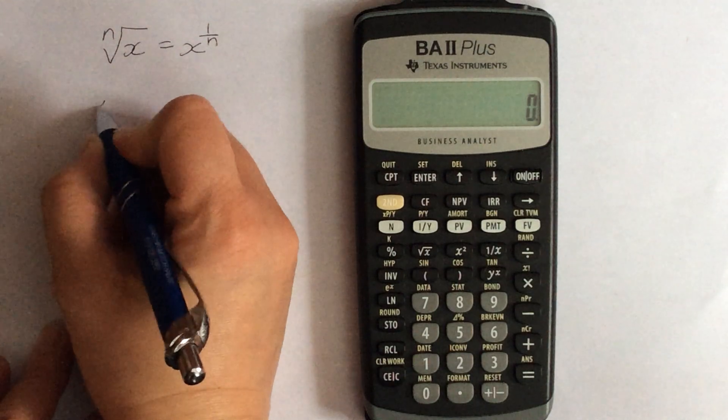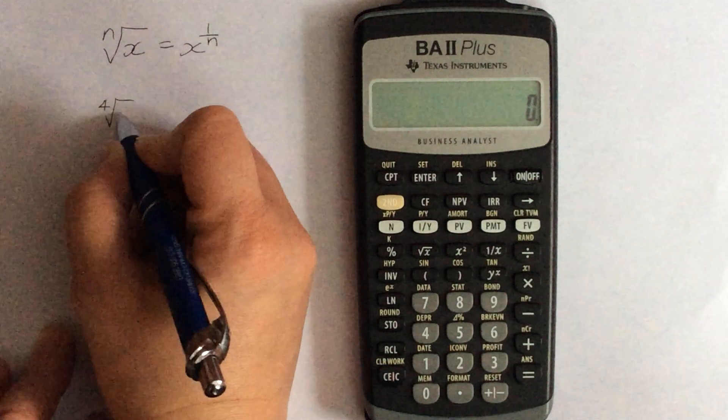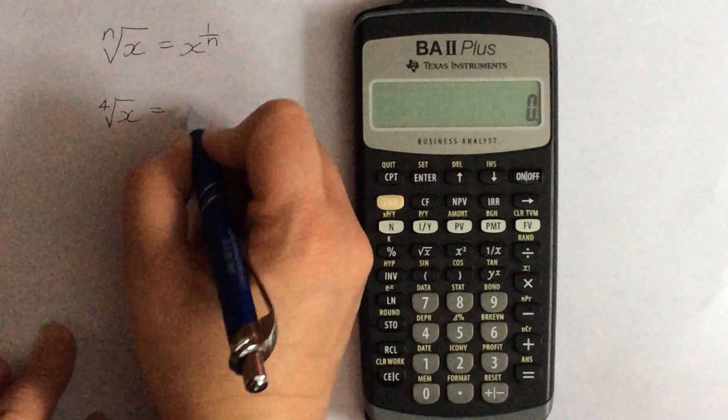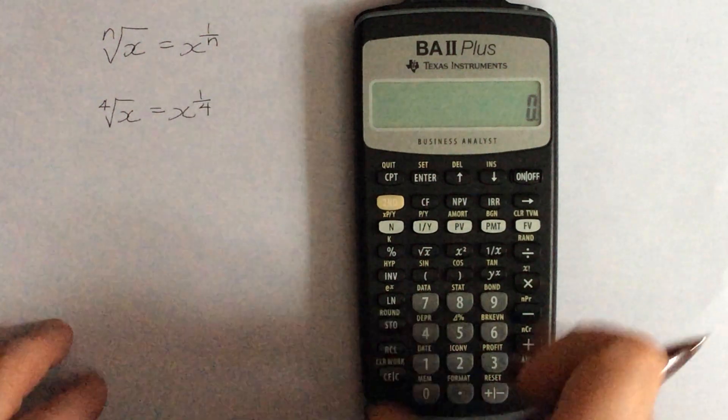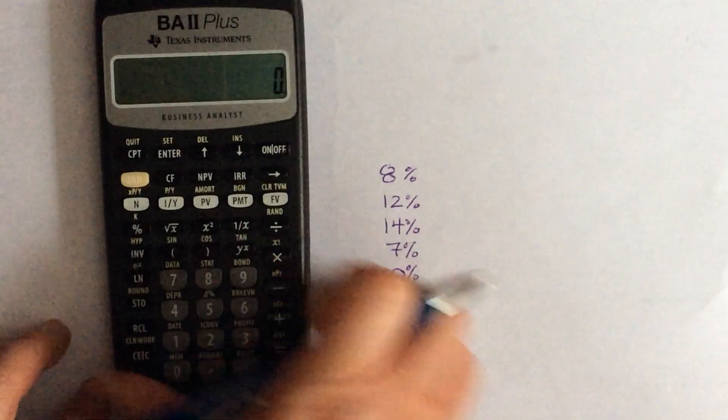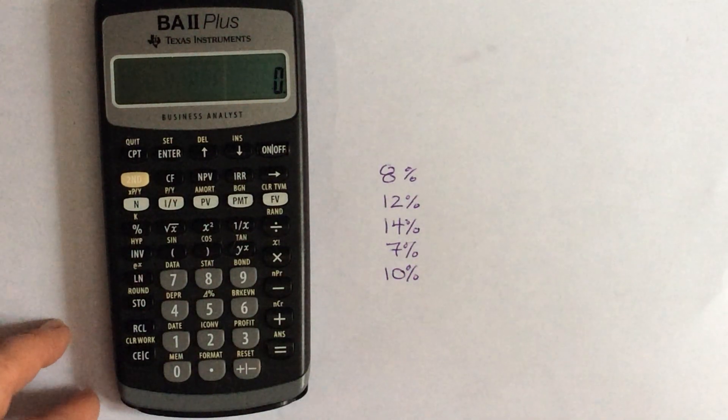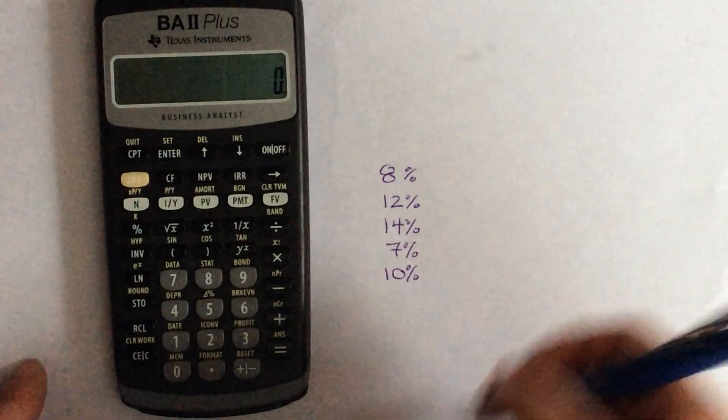Just as an example with a real number, you can substitute any number in for n and it will work like this. Let's say that we have a geometric mean problem and these are our percentages.